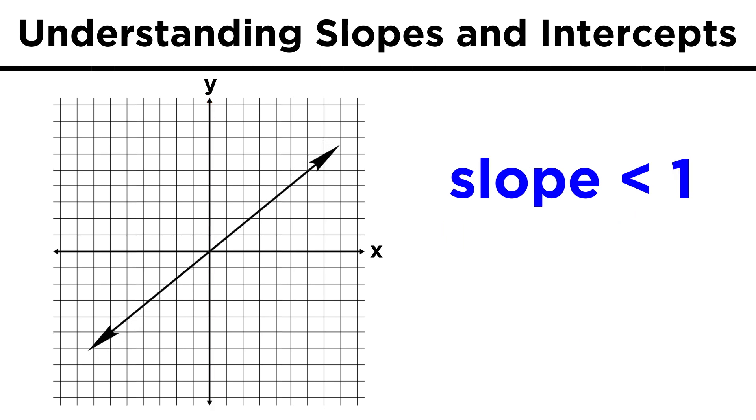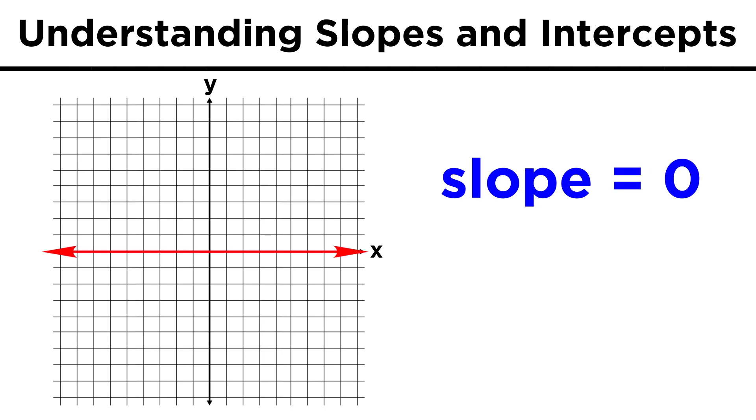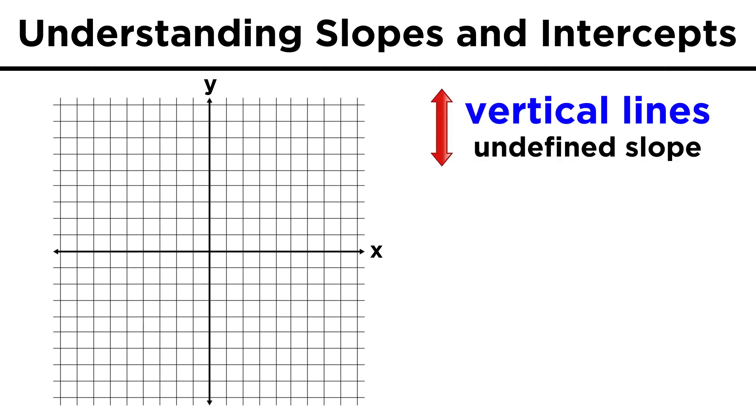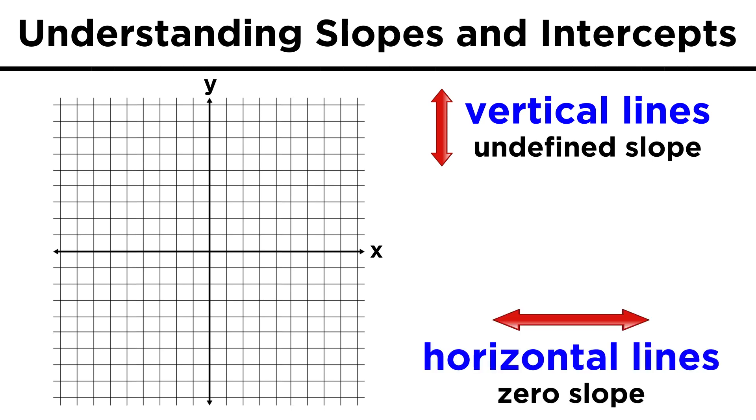If instead the slope is less than one, the line tilts downwards this way, the slope getting smaller and smaller, until it is completely horizontal, at which point the slope will become zero. The line runs all the way to infinity in the x direction, without rising at all, and zero over infinity is zero. So vertical lines have an undefined slope, horizontal lines have zero slope, and everything in between has some slope between zero and infinity.